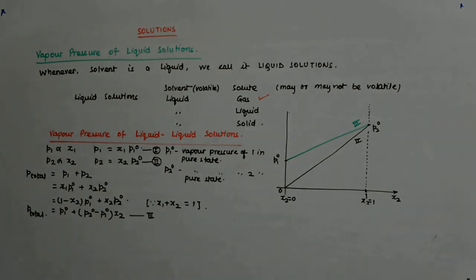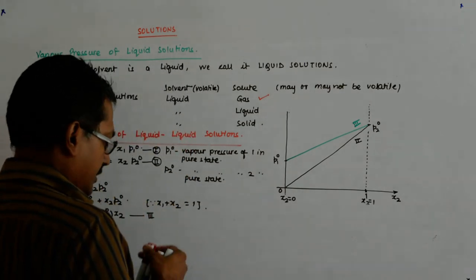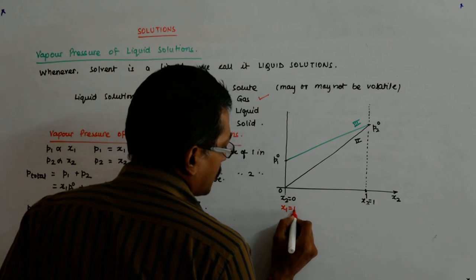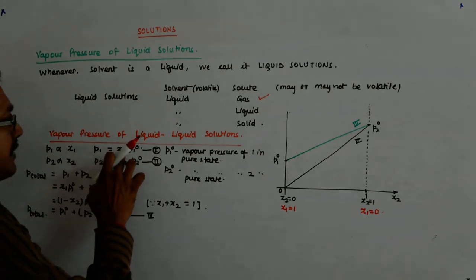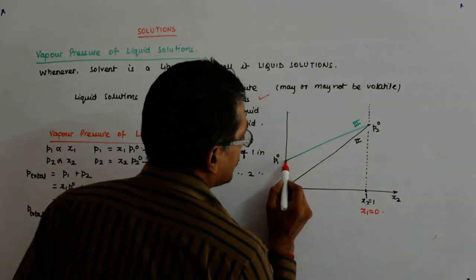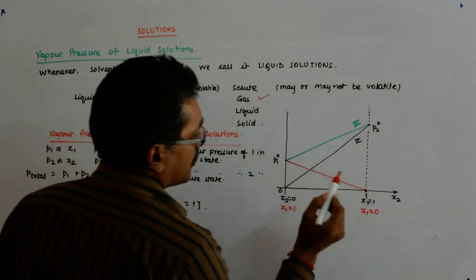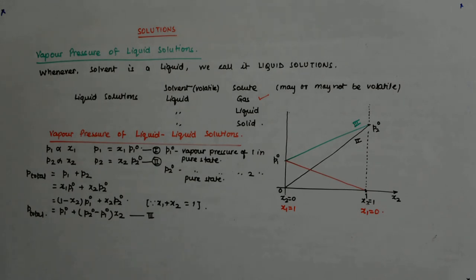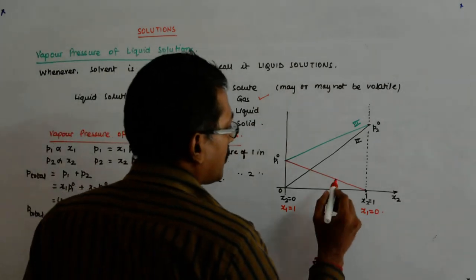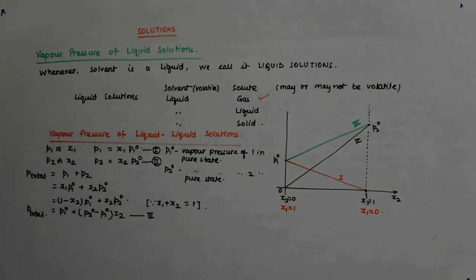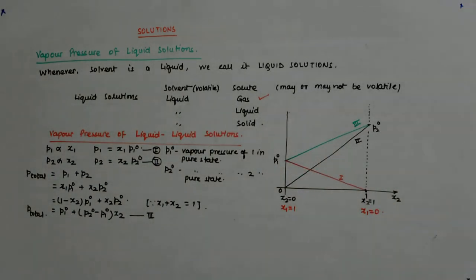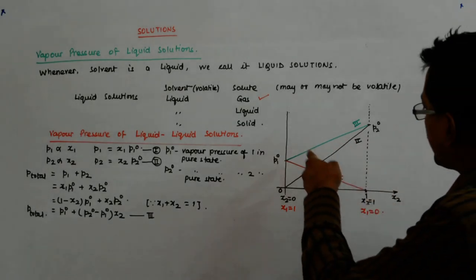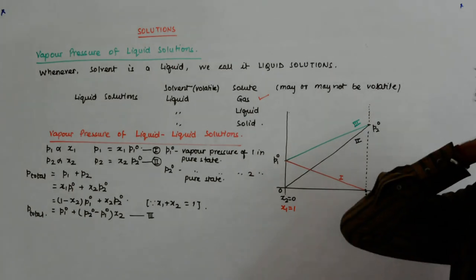The total pressure curve — the green curve — is actually the sum of the individual straight lines for P1 and P2. If I had drawn curve 1 and curve 2 and at each point added them, I would have obtained the total pressure curve, which is the third one.